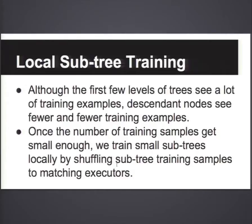When you train a decision tree, as you go down to much lower levels, the nodes see a much smaller number of samples. At that point, it's a waste of bandwidth — every time you do a Spark iteration, you still incur network and shuffle costs. So once you get to a node with a small enough sample size, instead of doing a distributed node split, we just pass the matching training data to different executors and train the whole subtree locally at that point.